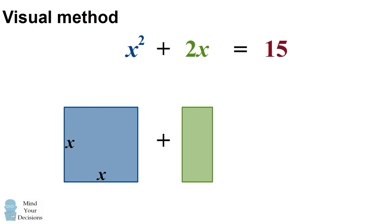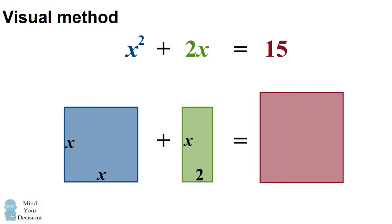The term 2x I'll represent by a rectangle which has a side length of 2 and another side length of x. The term 15 I'll represent by a rectangle which has an area of 15 — it doesn't matter what the exact side lengths are, only that the area is 15. The task we have is to make the two shapes on the left have areas equal to the shape on the right. We want to combine the two shapes, and lucky for us, they have one common side of x, so we can combine them on that common side.